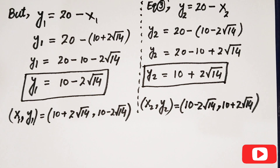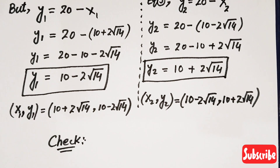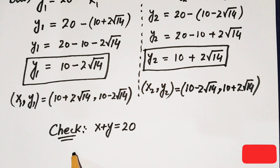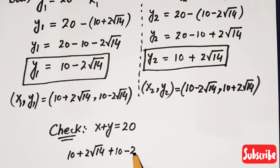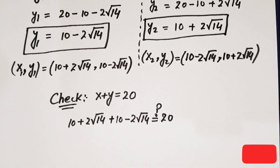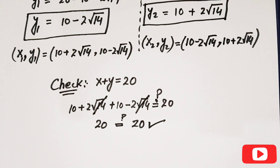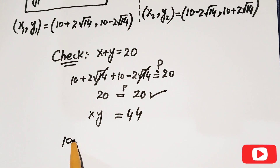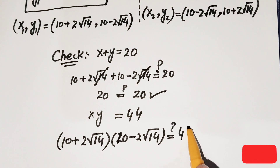We now check our answer using the first pair. For equation 1, x plus y: (10 plus 2 root 14) plus (10 minus 2 root 14) equals 20. The root 14 terms cancel, and 10 plus 10 equals 20, so 20 equals 20. Both sides are equal.